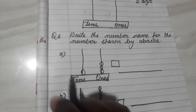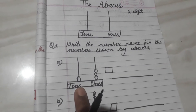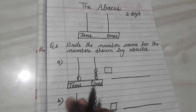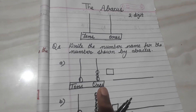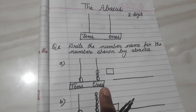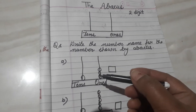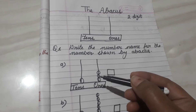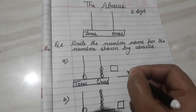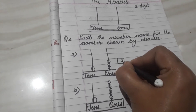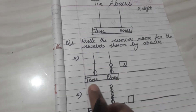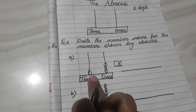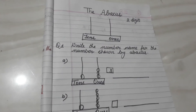Just look at here. Here are two rods. As we know, the right rod tells us about the ones place. First, count how many beads are at the ones place. One, two, and three. It means we will write three at the ones place. And how many beads are at the tens place? Here is only one bead.